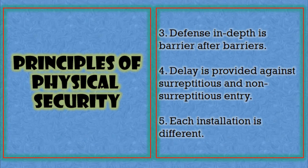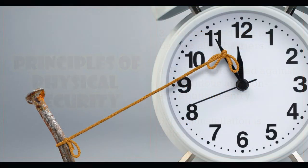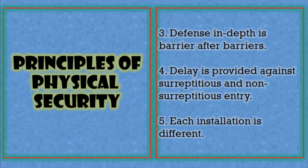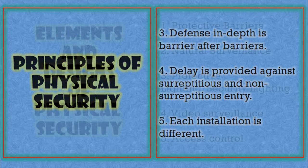Another principle: delay is provided against surreptitious and non-surreptitious entry. Sometimes physical security measures do not keep us absolutely safe — they only delay entry, giving us time to detect intruders. So it serves to delay surreptitious entry, not necessarily to prevent it entirely. Also, each installation is different, so we must consider whether specific measures are appropriate for a given location.